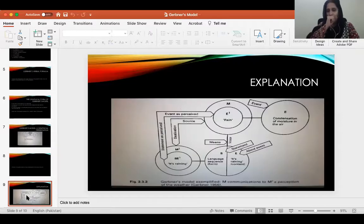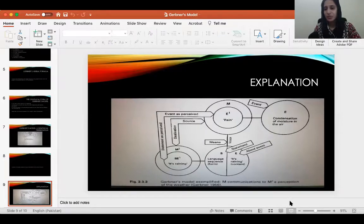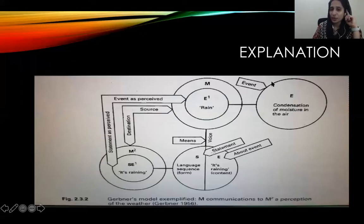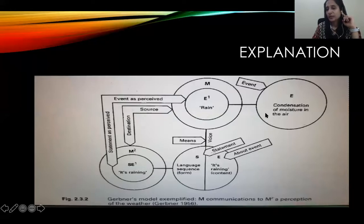Gerbner's model is actually a chain of perception, production, and then further perception. For example, there is an event related to condensation of moisture in the air — a process whereby gas vapors come into contact with moisture and are transformed into water droplets. A reporter sees this event and perceives it as rain. He generates a statement about the event and sends it through another channel.